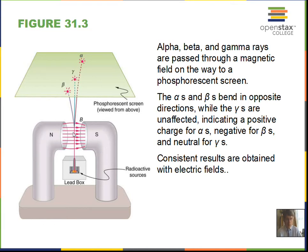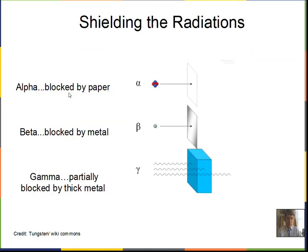An equivalent test can be done by sending the radiations through an electric field, and you get the same result: positive for the alpha, negative for the beta, and no deflection for the gamma rays. As for stopping the radiations with shielding, it was found that it's very easy to block the alphas — one sheet of paper, or about five centimeters of air will block an alpha particle. The betas can be blocked by a thin metal. Gammas are much harder to block — quite a bit of thickness of lead or some other dense metal is required to stop the gamma rays.